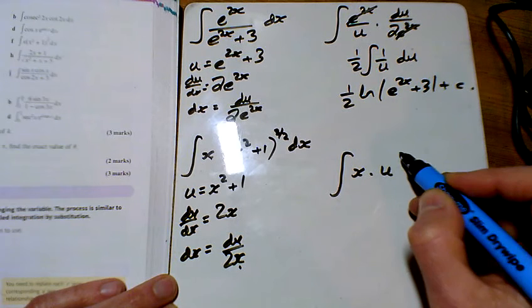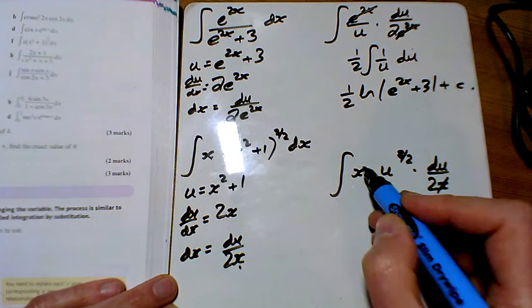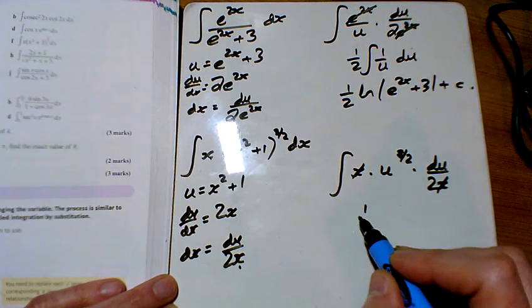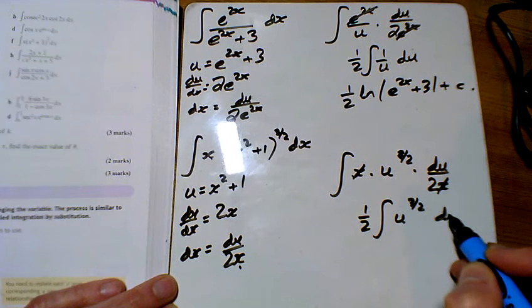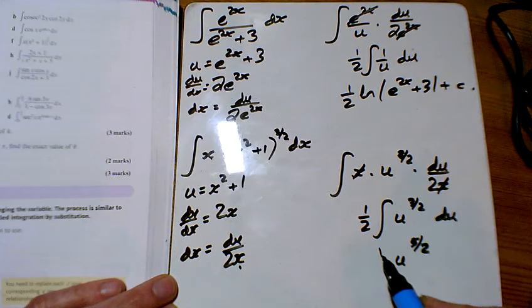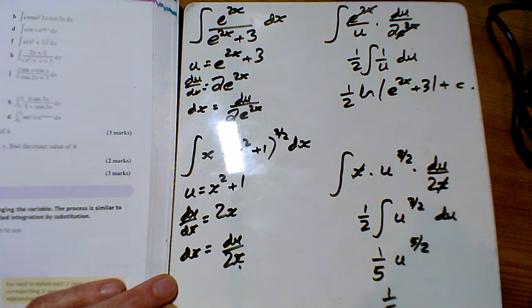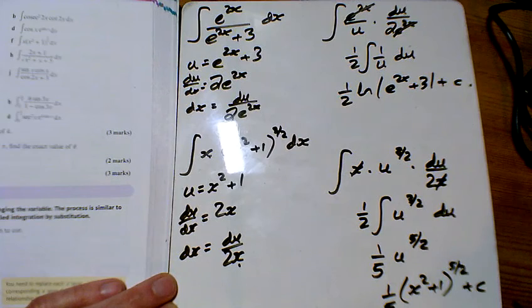We've got u to the 3 over 2, and I've got the 2x cancelling there. So I've got a half the integral of u to the 3 over 2 du. Power goes up by 1, divide by that new power, makes 1 fifth outside it. So my answer is 1 fifth x squared add 1 to the 5 over 2 plus c.